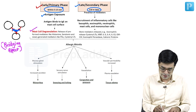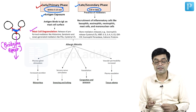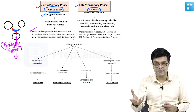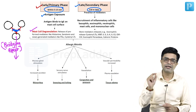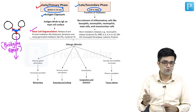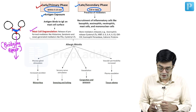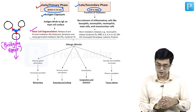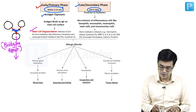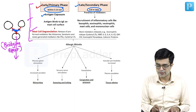All these mast cells degranulate, releasing preformed mediators like histamine, serotonin, and prostaglandins. Plus, there will be newly formed mediators like leukotrienes — specifically cysteine leukotrienes — prostaglandin D2, and sometimes serotonin freshly produced. All of these will be released, producing the initial part of rhinitis — what you call the early phase.